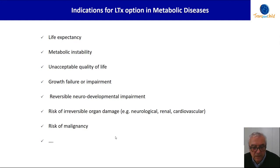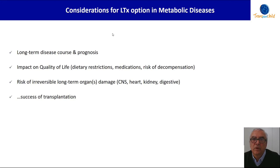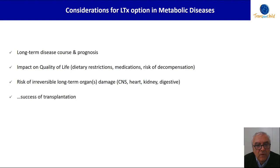Which are the considerations to be taken into account for the option of liver transplantation in metabolic disease? I focused my attention on the long-term disease course and prognosis, the impact on quality of life in terms of dietary restriction, use of medications, risk of decompensation, risk of irreversible long-term organ damage — in particular at the level of the central nervous system, heart, kidney, and digestive system — and, of course, success of transplantation.